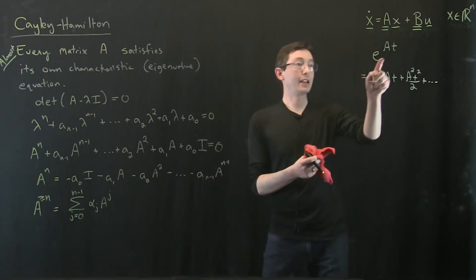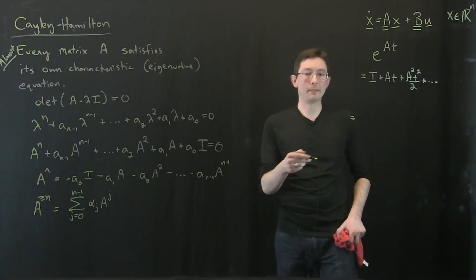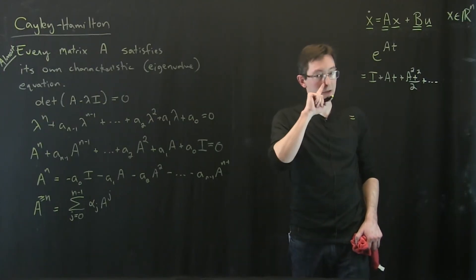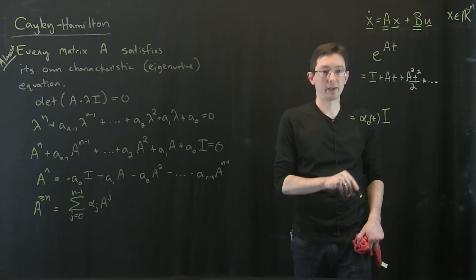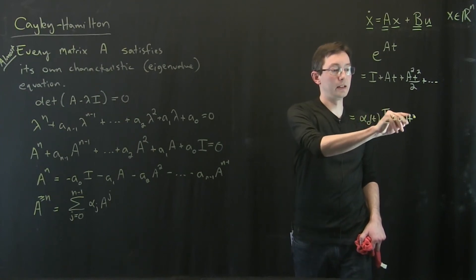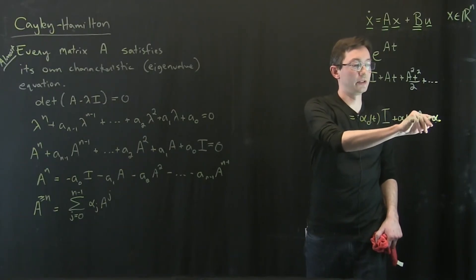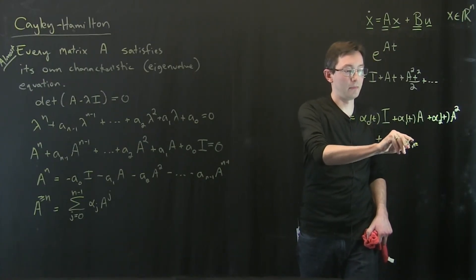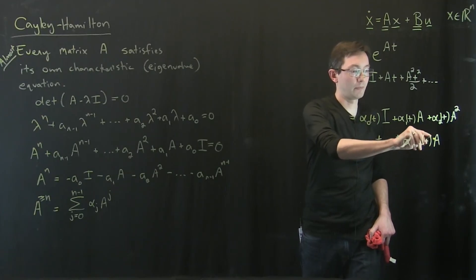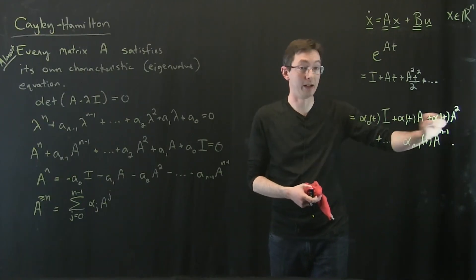So this is absolutely remarkable. I can write this E to the A T instead of an infinite sum of matrices. I can write this as some coefficients. I'm going to call it alpha_0 of T times the identity matrix plus alpha_1 of T times the A matrix plus alpha_2 of T A squared plus dot dot dot plus alpha_{n-1} of T A^{n-1}, period. This is a finite sum. There's not an infinite sum of terms here.